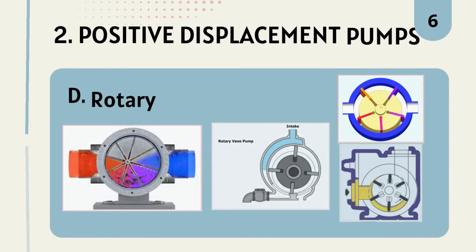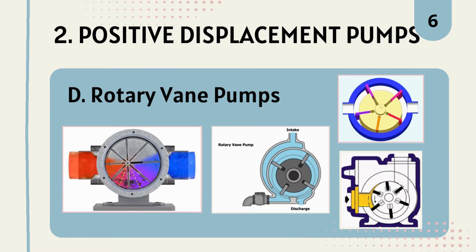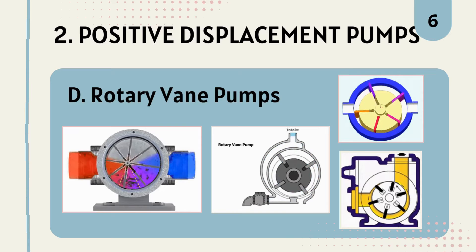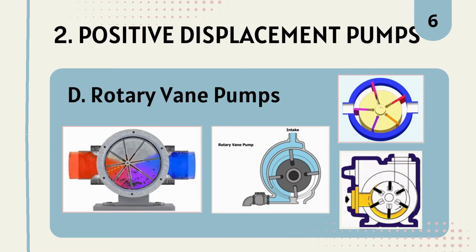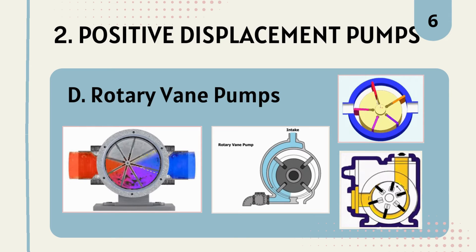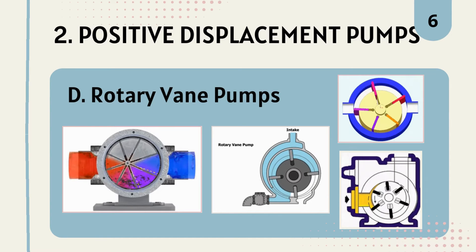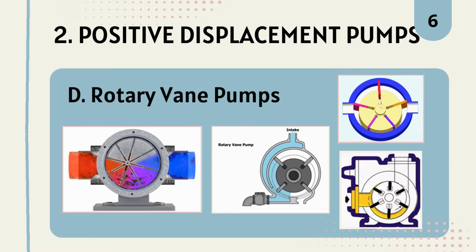The last type of positive displacement pump covered in this video is the rotary vane pump. This type of pump uses vanes mounted on a rotor to displace the fluid. They are suitable for low-viscosity liquids and are commonly used in chemical processing, pharmaceutical, and vacuum applications.